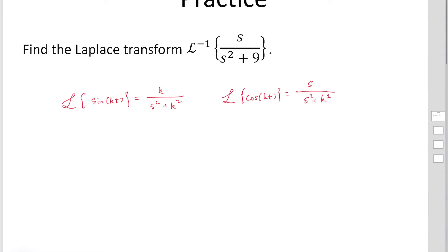So if you compare these two cases with S over S squared plus 9, you can easily find S appears in the numerator in the case of the cosine function. We should use the Laplace transform of the cosine function.